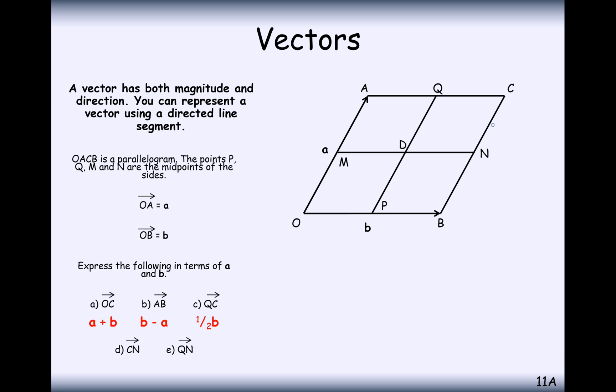The next question is to get from C to N. Seeing as that's going back along the a vector by a half, that's minus a half a. So how do we get from Q to N? We'll go from Q to C first, then from C down to N. We've already worked out most of this. We've got Q to C and C to N, so we add those two vectors together: half b take away half a.